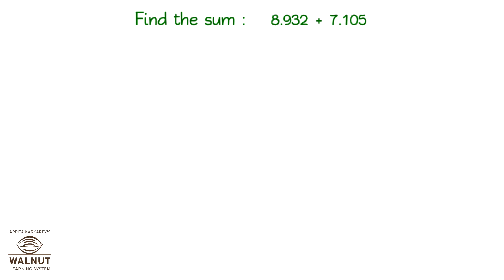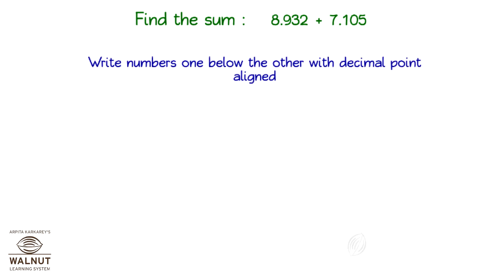Find the sum 8.932 plus 7.105. Write numbers one below the other with the decimal point aligned. 8.932 plus 7.105.